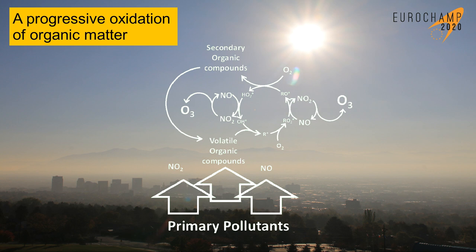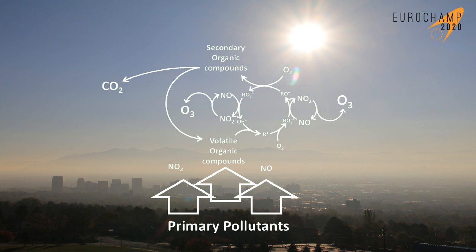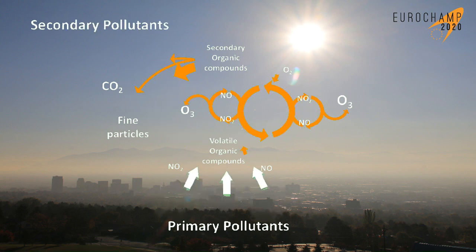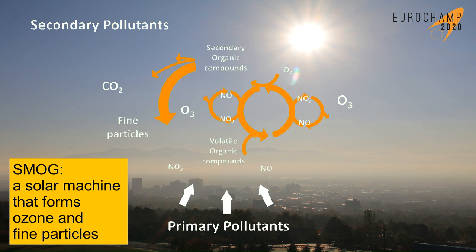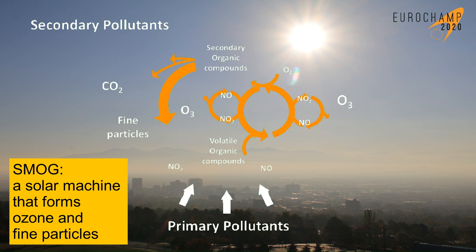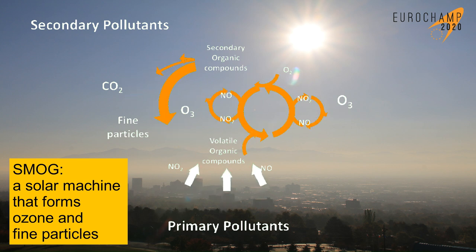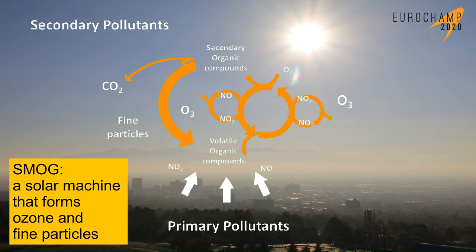Atmospheric organic matter undergoes a progressive oxidation until it is ultimately fully oxidized. Most of the organic species end up in the form of carbon dioxide. But during the course of the oxidation, some of the secondary oxidized compounds become so poorly volatile that they condense into fine particles and form the so-called secondary organic aerosol. This is why during summer smog events, the level of fine particulate matter is often very intense. In reality, hundreds of thousands of reactions involving tens of thousands of different species are occurring in any given region. The rate of these oxidation processes, their extent, the amount of ozone and particulate matter, and the chemical nature of all the secondary pollutants are different for each precursor.